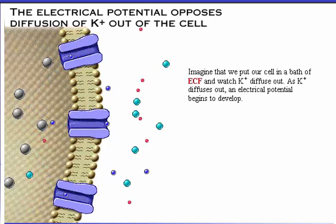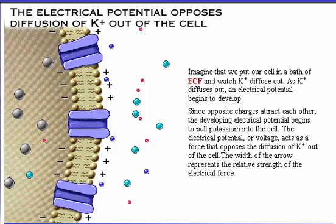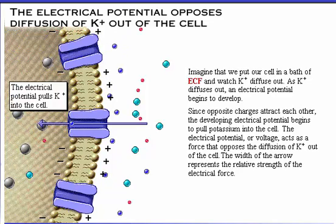Imagine that we put our cell in a bath of extracellular fluid and watch potassium diffuse out. As potassium diffuses out, an electrical potential begins to develop. Since opposite charges attract each other, the developing electrical potential begins to pull potassium back into the cell. Thus, the electrical potential, or voltage, acts as a force that opposes the diffusion of potassium out of the cell. The width of the arrow represents the relative strength of the electrical force.